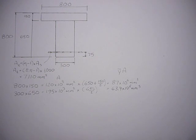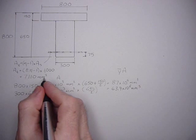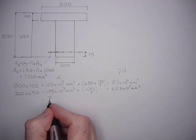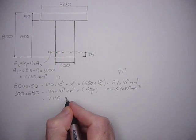And then the transformed area of steel: that's just 7110 millimeters squared.